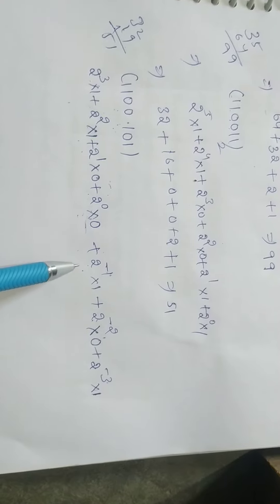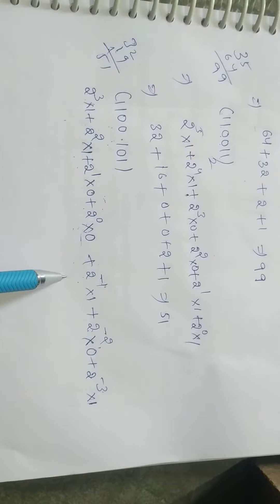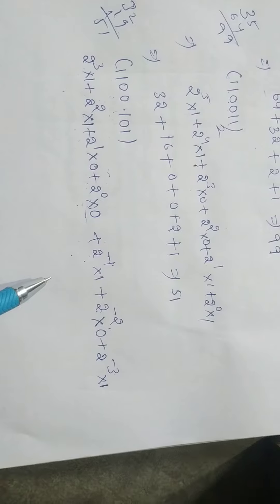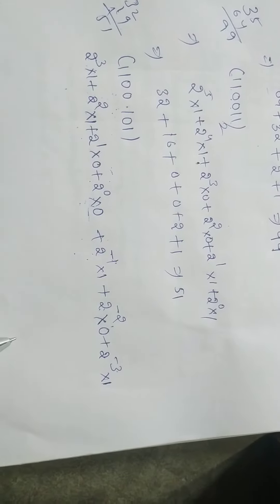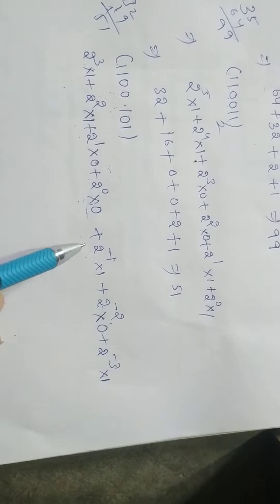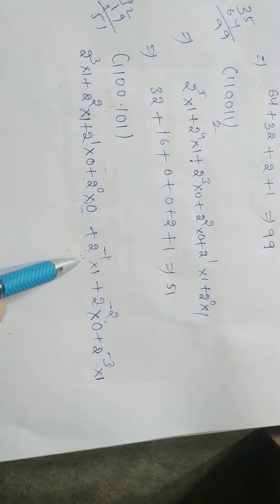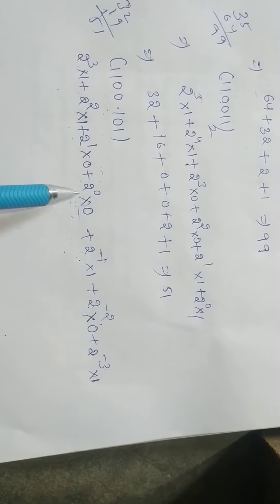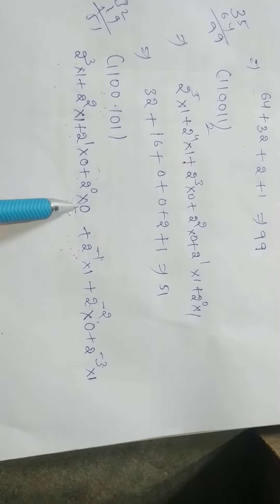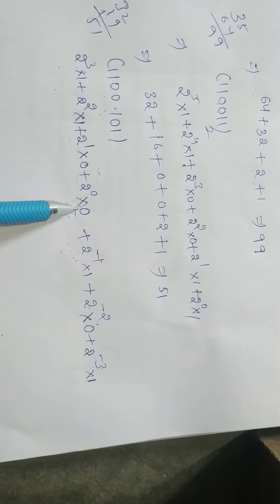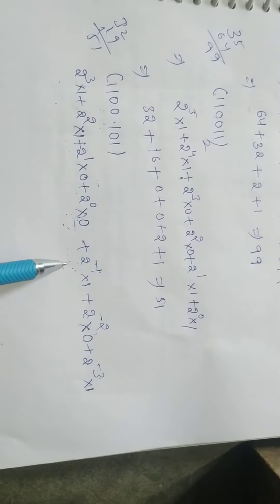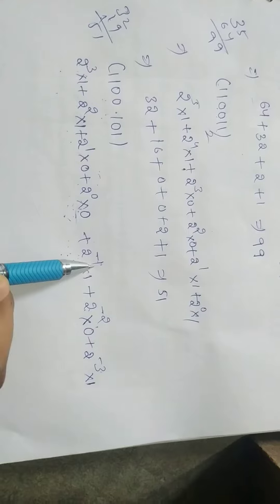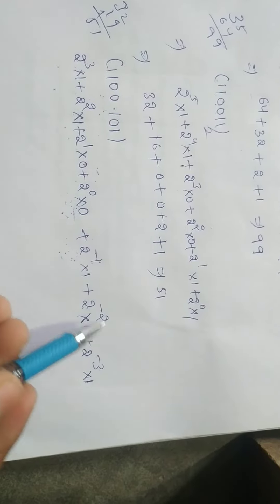The zero values in the negative positions are not taken because zero multiplied gives zero. That's why we directly take the minus one position. In this decimal conversion, for negative power positions, if the bit is zero, it contributes nothing, so we take only the positions with a value of one.